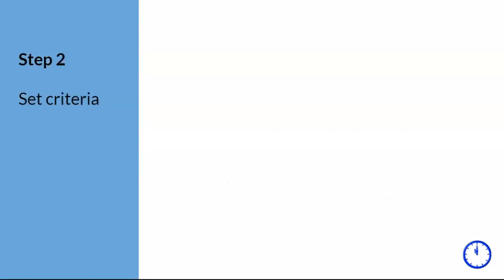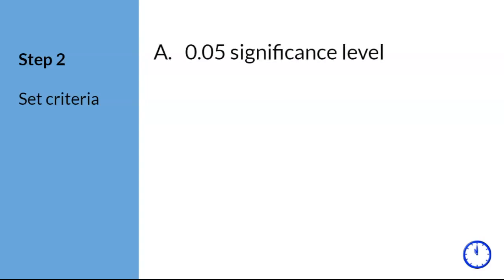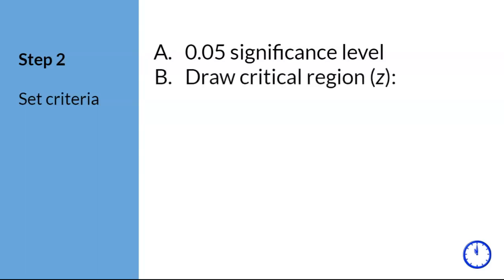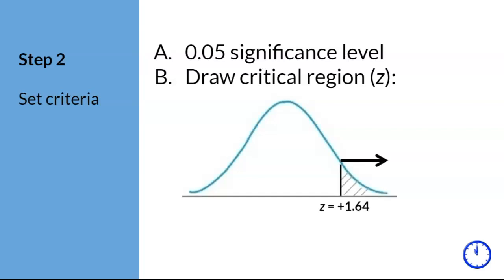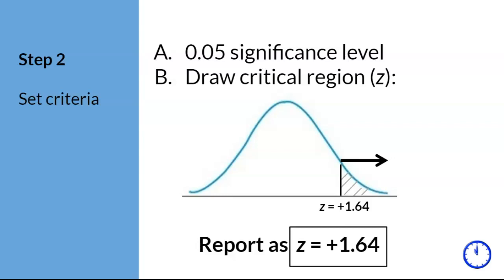Step two. As a researcher, we get to decide the significance level, and the preferred one is 0.05. Since we are predicting an increase in cognitive functioning, we need to draw a critical region z for one tail above the mean. The corresponding z-score for a 0.05 significance level, one tail, is z equals plus 1.64. The box indicates the final answer that I will be looking for on a problem set and an exam.